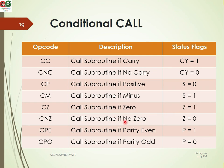Call subroutine if not zero (CNZ). Call if carry (CC). Call if not carry (CNC). These are the conditional call instructions available.